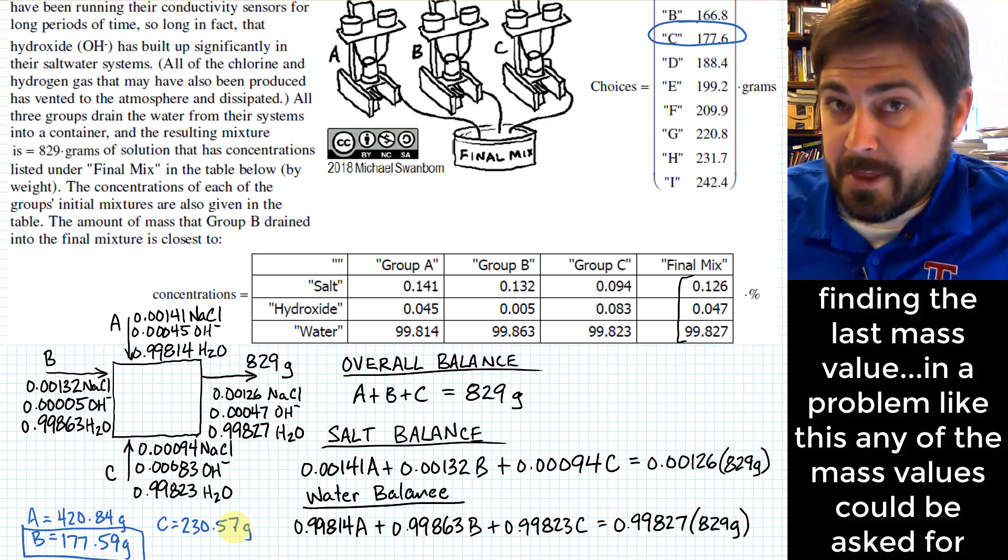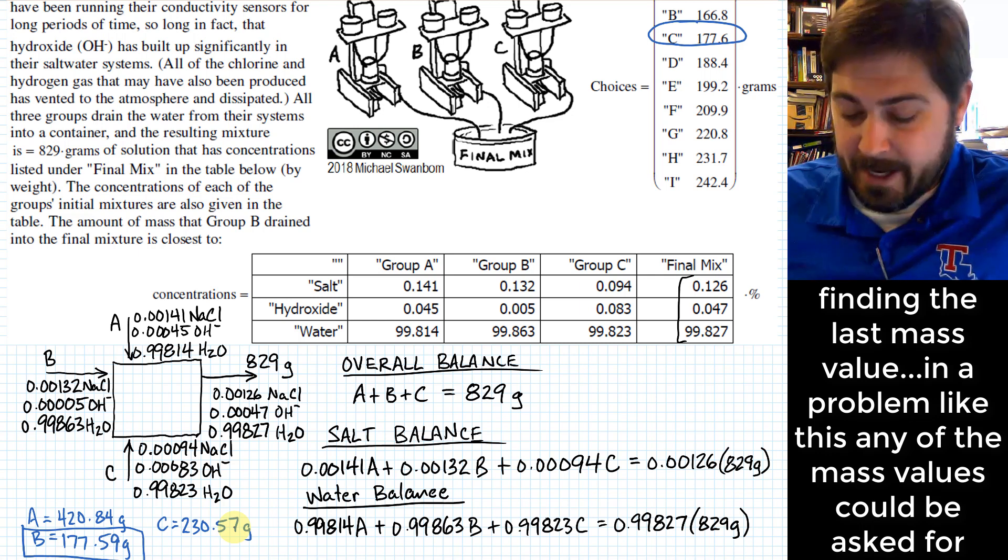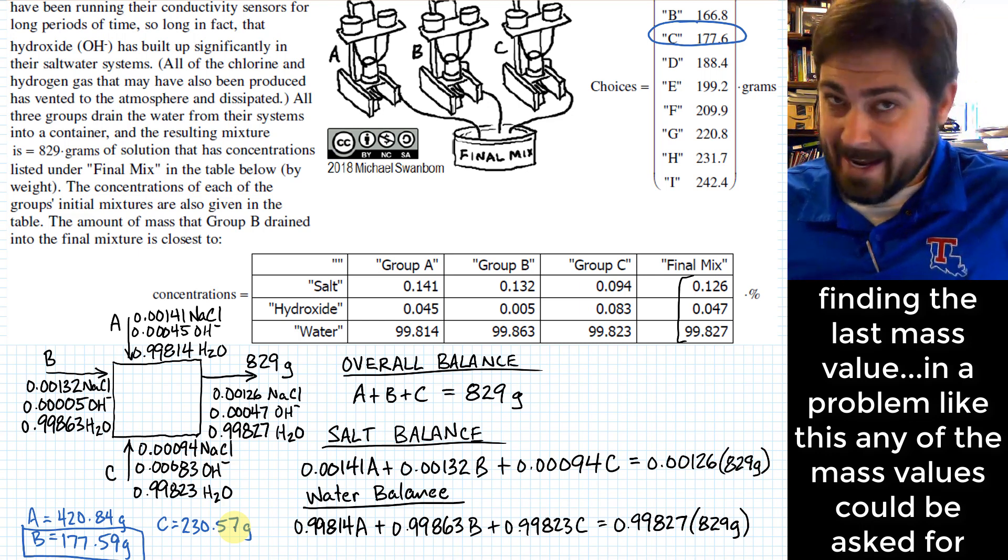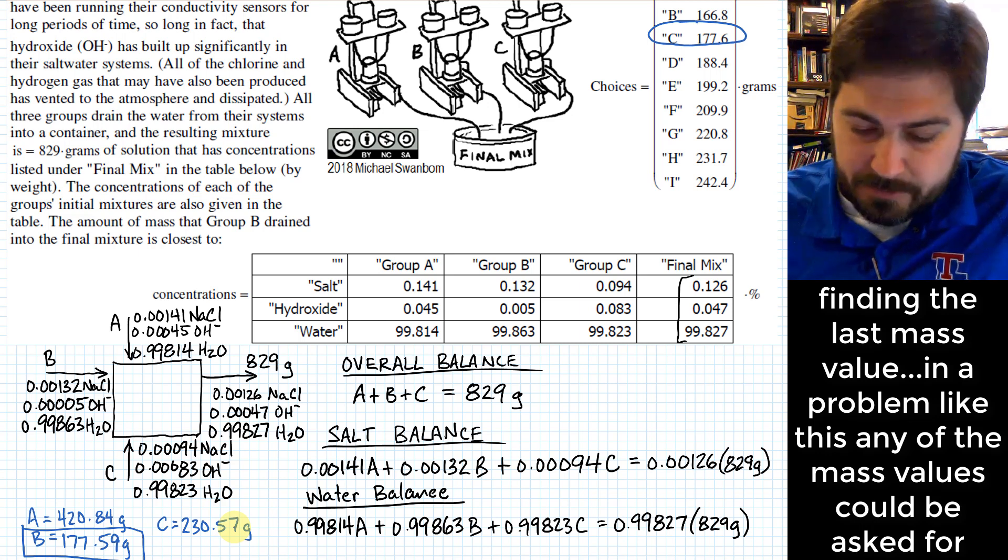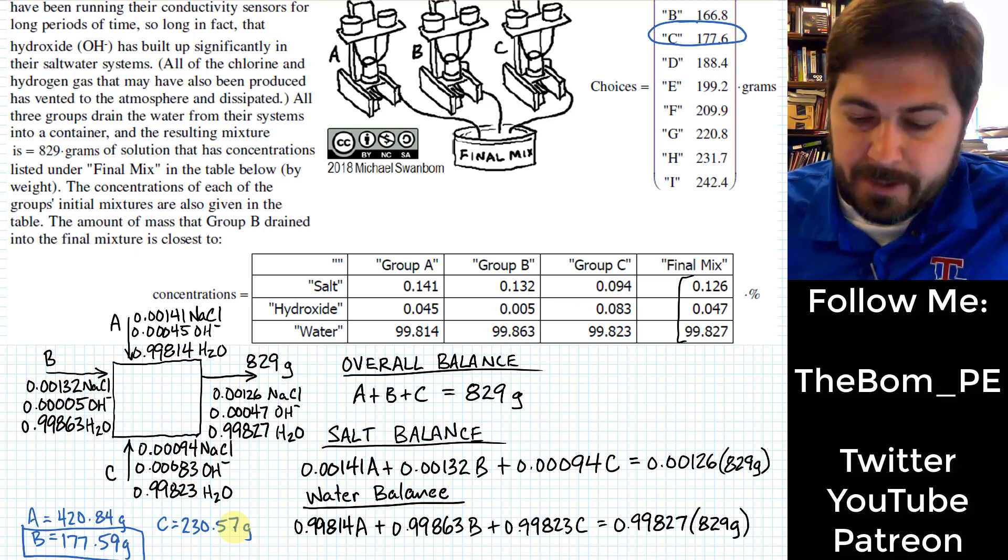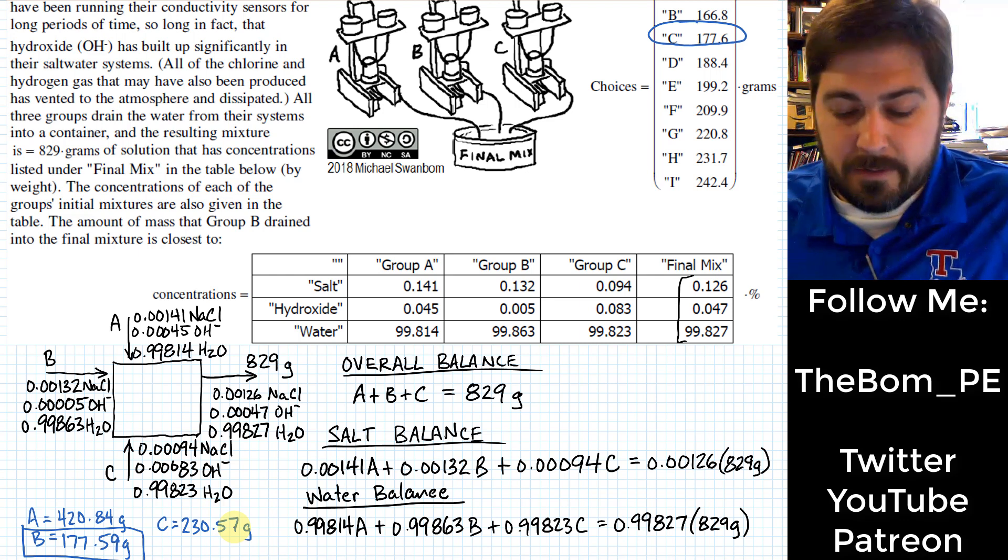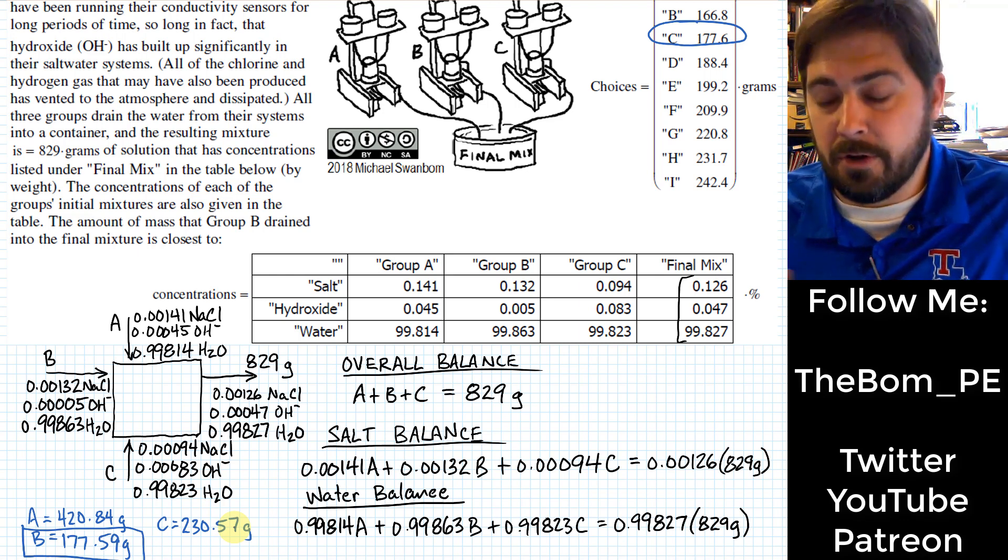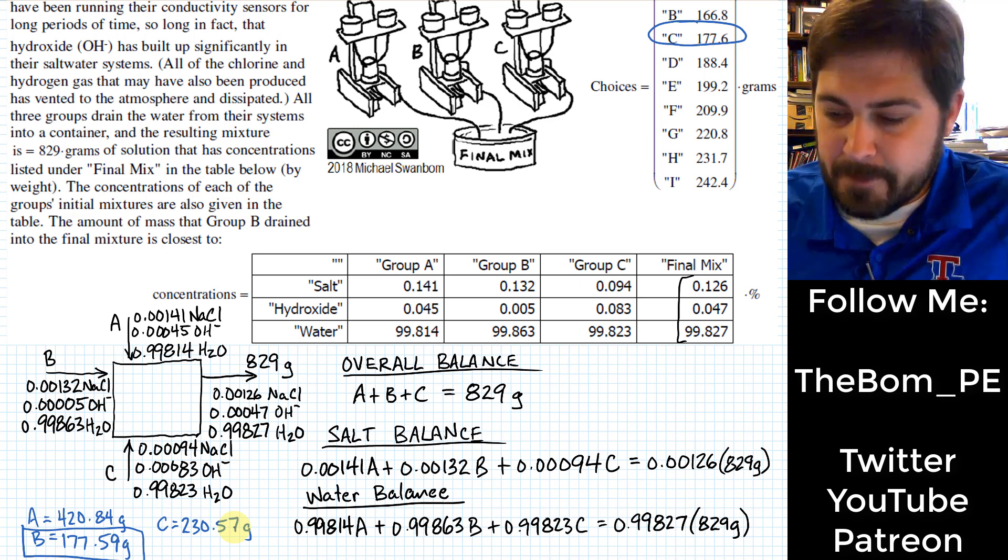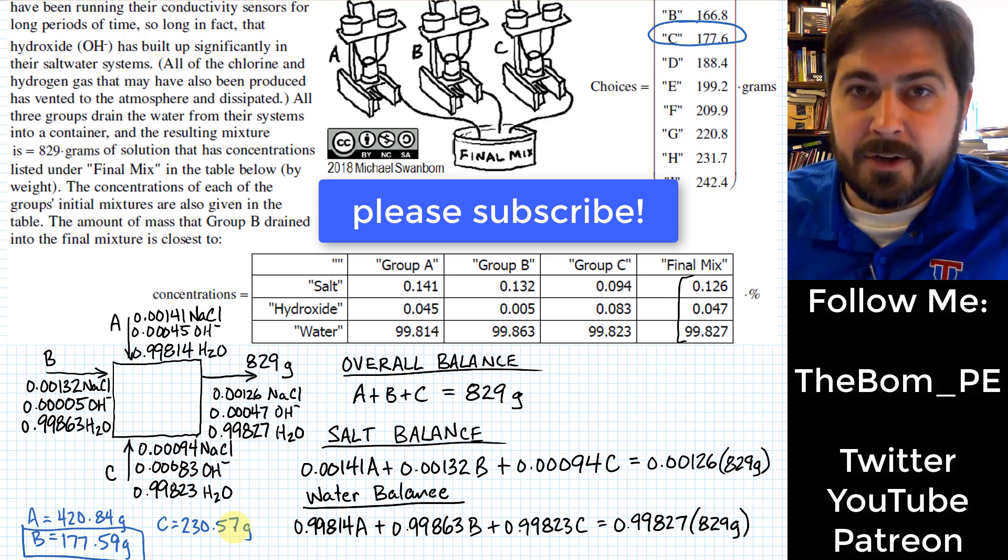And so there wasn't really anything special for this problem about why it asked for B as opposed to A or C. The idea is that if you can solve the problem, you could get any one of those three values from those three systems that would be draining into the final mix. So I hope this is helpful. This is an example of a system where there are three different components of material mixed together. Water, salt, and hydroxide. And in those cases, you can write three independent equations that can be solved simultaneously, and you can get all three of those variables that you're trying to solve for. Thank you for watching, and I hope you subscribe to the channel. I'd greatly appreciate that.